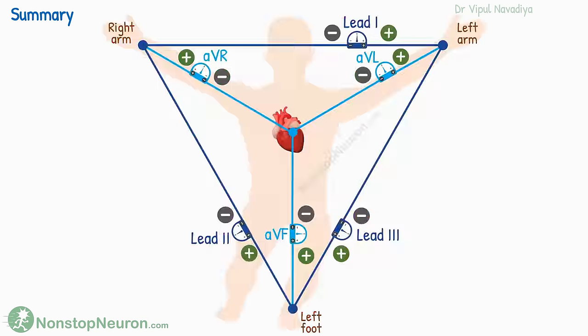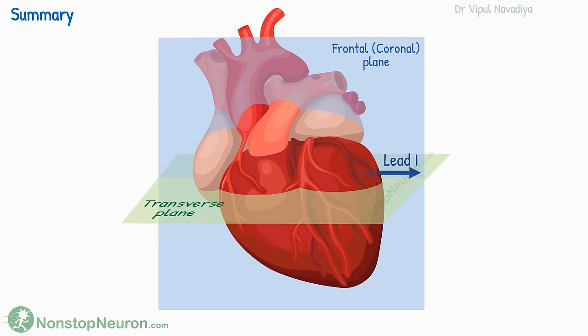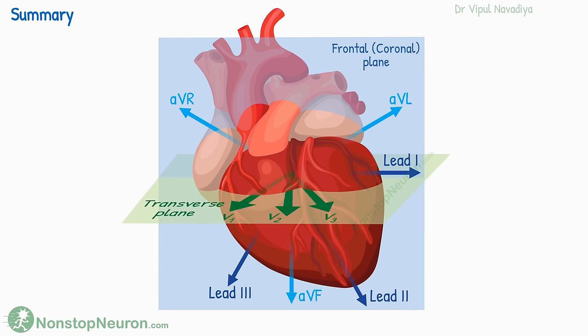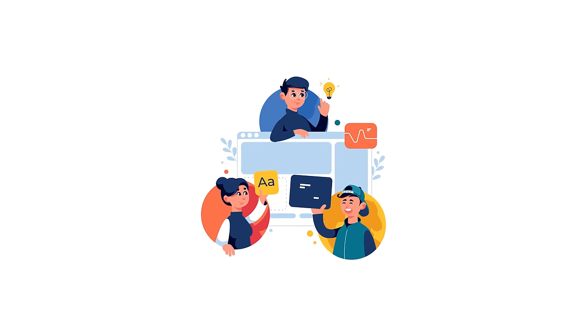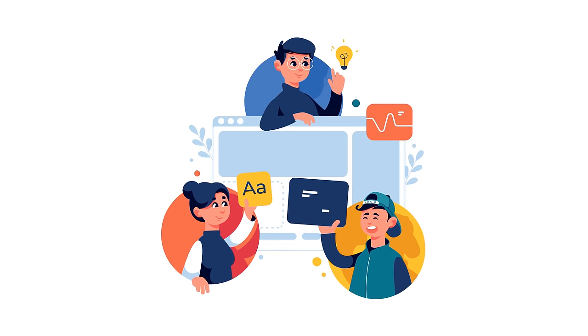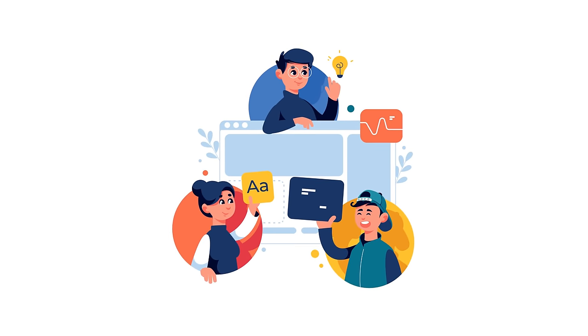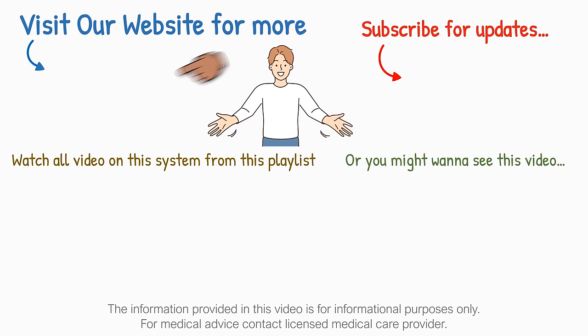One last thing — the electrode on the right leg is used for grounding only, so it was intentionally not mentioned to prevent confusion. If you watched the video till the end, please share it with your friends, like, and comment. Thanks for your kind support. See you in the next video.